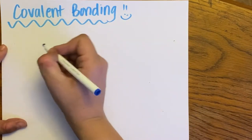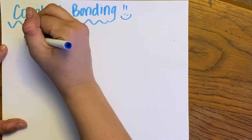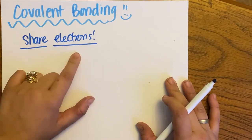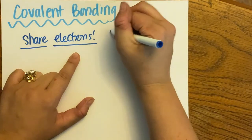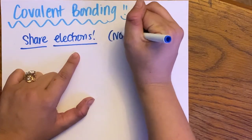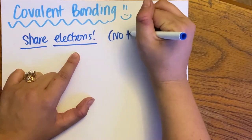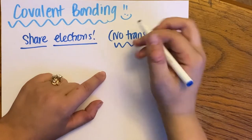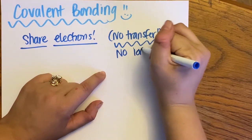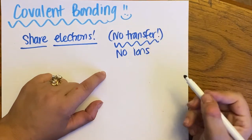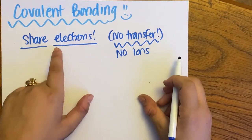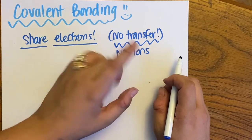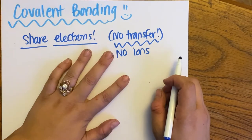Covalent bonding is elements sharing electrons. There is no transfer, and since there is no transfer of electrons, this means there are no ions. I'm not making a cation or an anion by either taking an electron or gaining an electron.